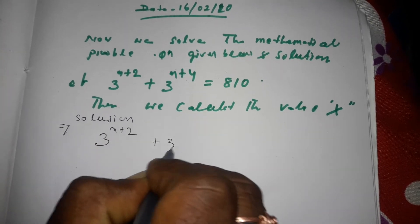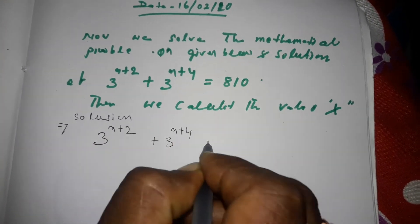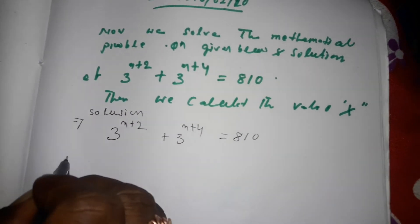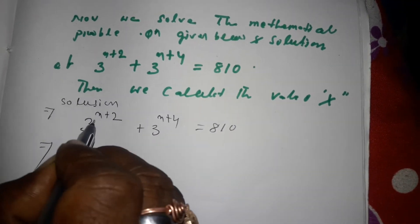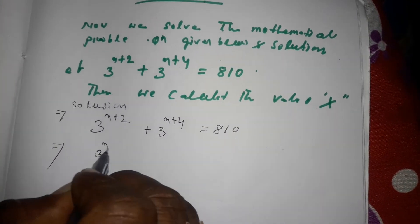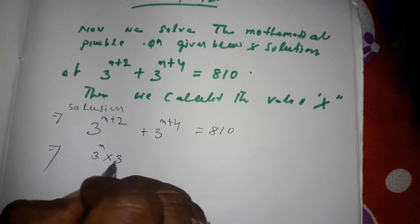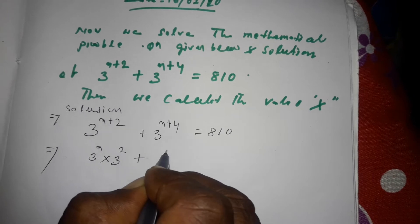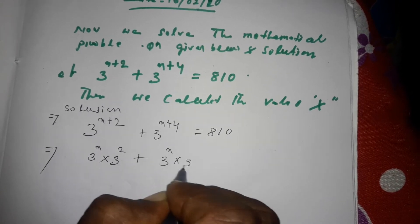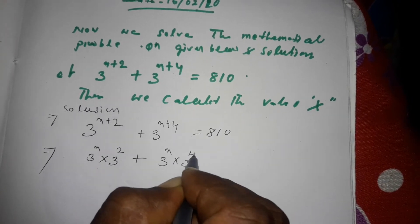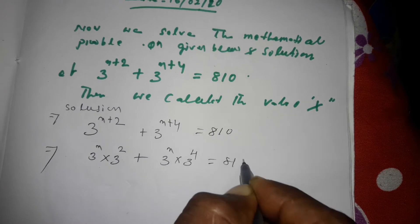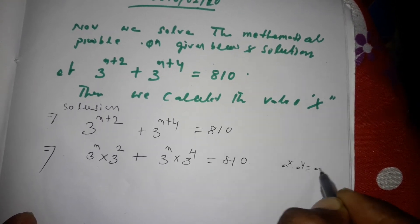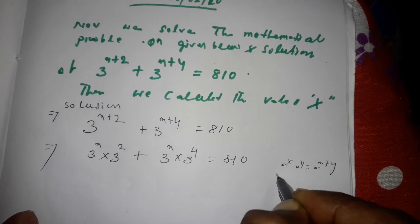We write: 3 to the power x plus 2, plus 3 to the power x plus 4, equals 810. We know that a to the power x into a to the power y equals a to the power x plus y. We will use this formula.